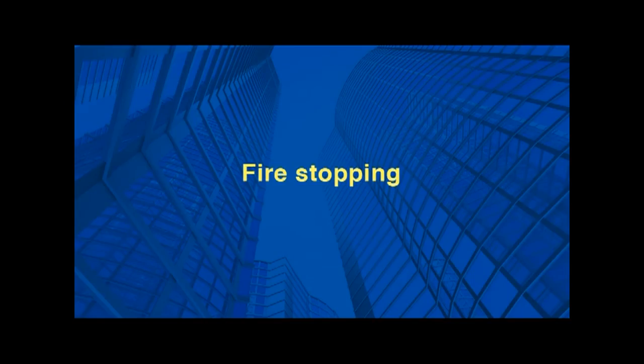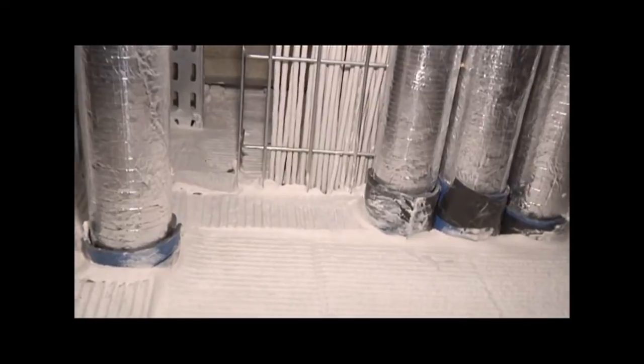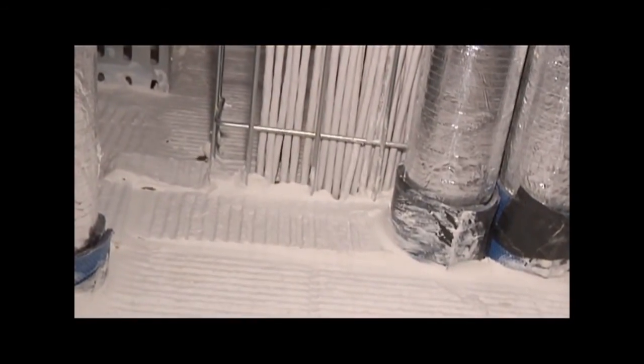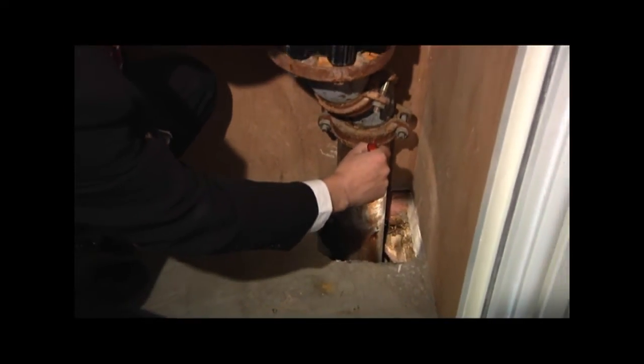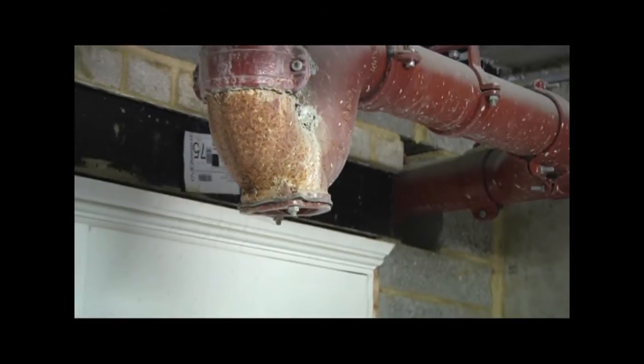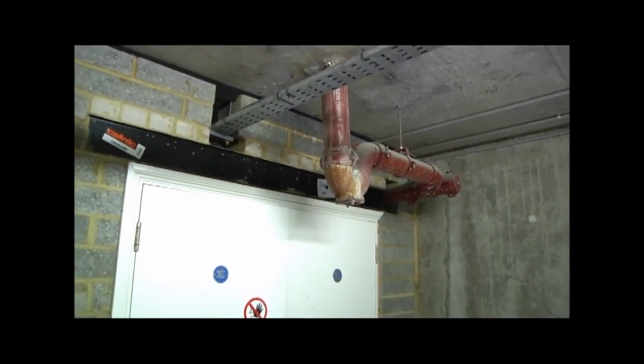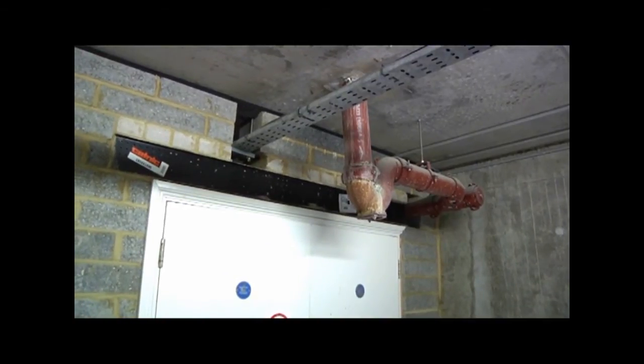For a wall or floor to be effective in restricting fire and smoke spread, all joints, gaps and openings for services must be adequately sealed or fire stopped. Unsealed pipes, cables, ventilation systems and so on passing through fire-resisting walls, ceilings or floors are a common cause of fire spread that can lead to escape routes being compromised.